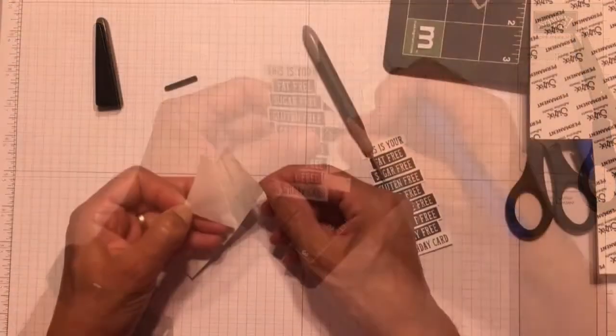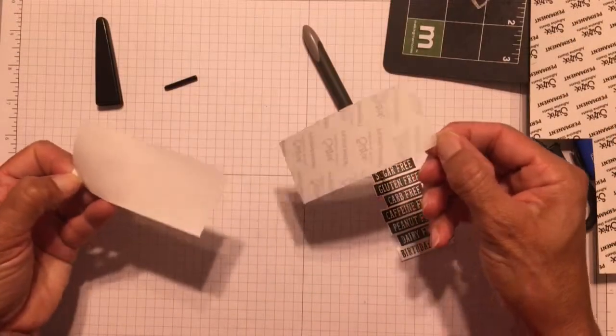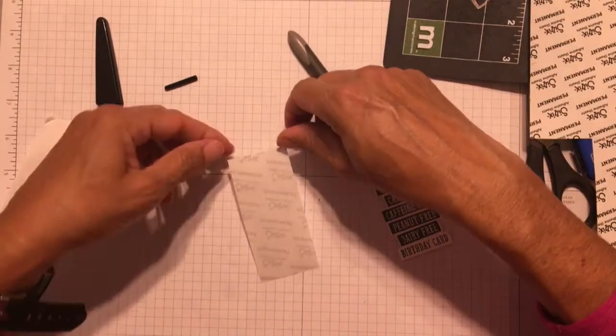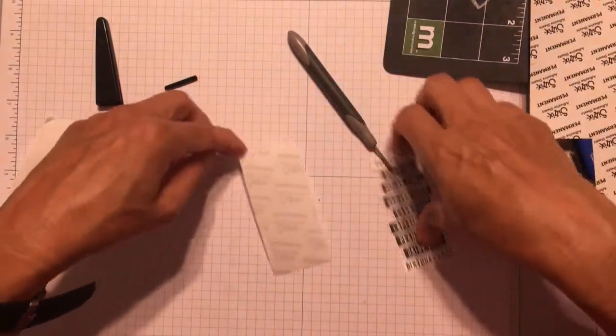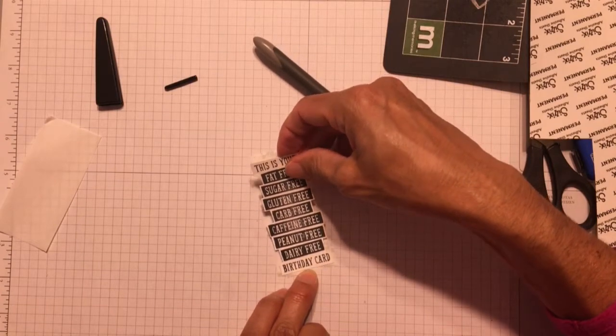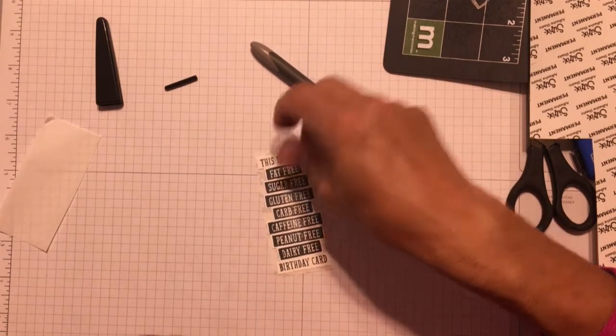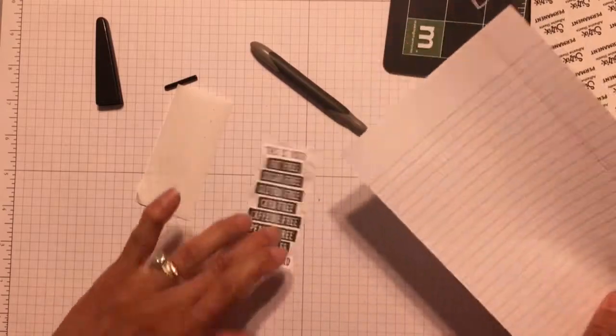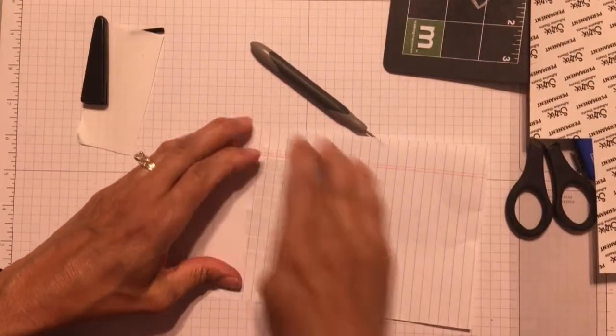In my previous video, which was the mermaid cards, I tried to use adhesive sheet on die cuts after I had already cut them out. And it didn't work great because I had a lot of the adhesive hanging off the edges. So this time what I decided to do was to apply my sentiment to the adhesive sheet.